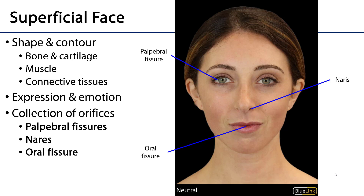Probably a little bit less of a romantic way of viewing the face is that it's a collection of orifices. In particular there are three. There are bilaterally paired palpebral fissures — these would be the eye orifices.